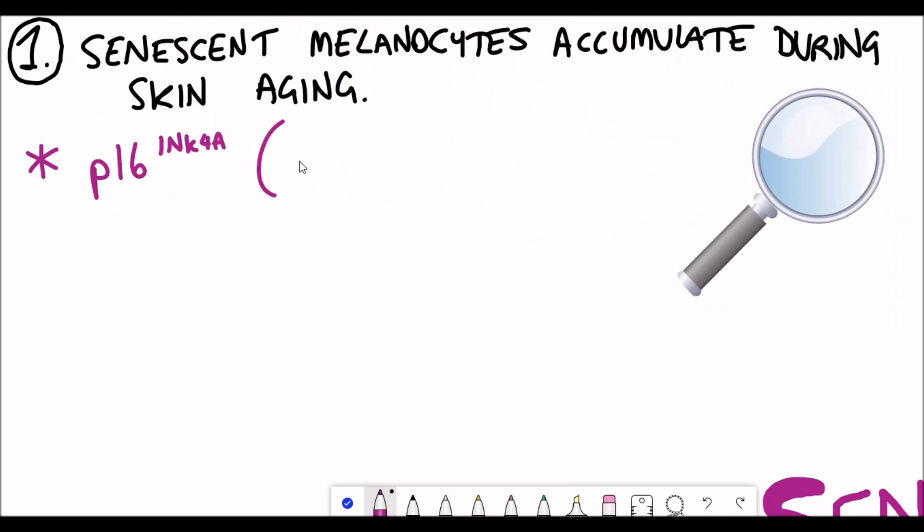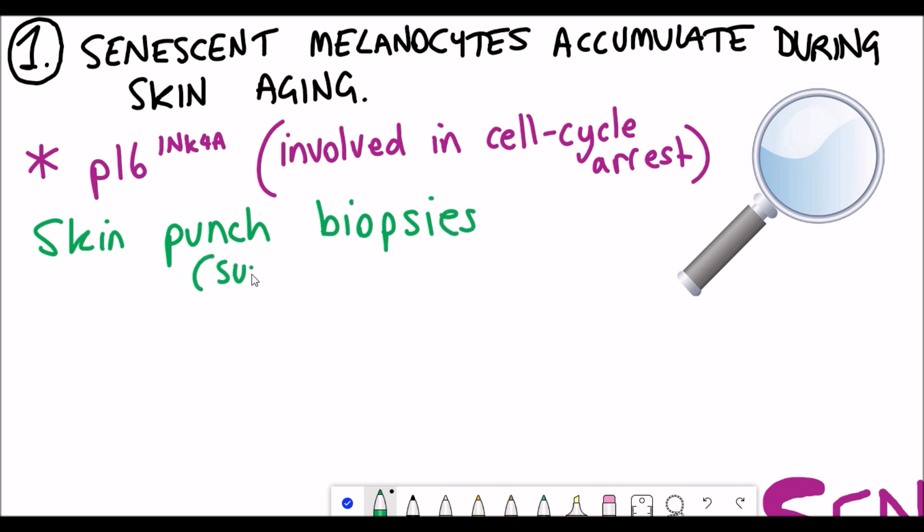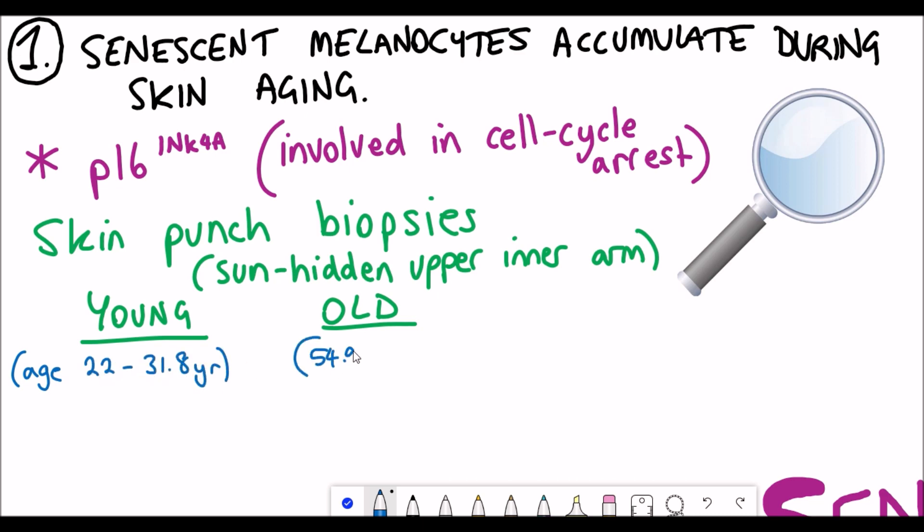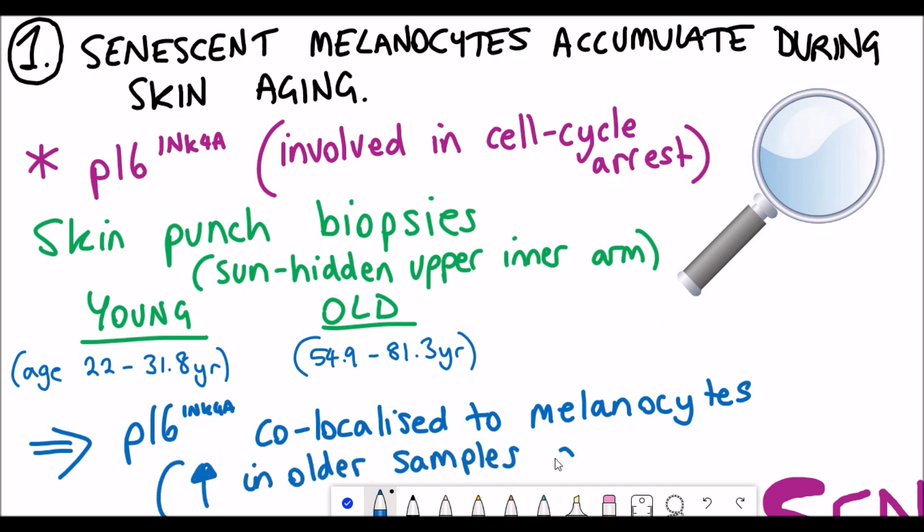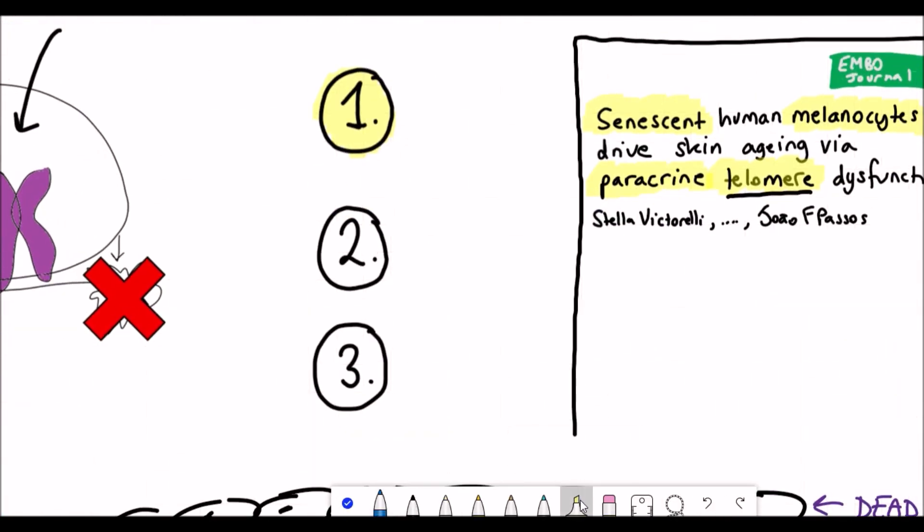How do you actually identify a senescent melanocyte? Well, identifying senescent cells is no trivial process but one marker that can be used is the expression of p16, which is a protein involved in cell cycle arrest. In the study they took skin punch biopsies from humans classified as being both young and old from the sun-hidden region underneath the upper inner arm. They looked for the expression of p16 and found that it co-localized in these skin samples to the melanocytes and that the levels were higher in the older samples. Interestingly, they also saw in the older samples a decrease in the expression of SIRT1, which is a protein whose decline is associated with aging.